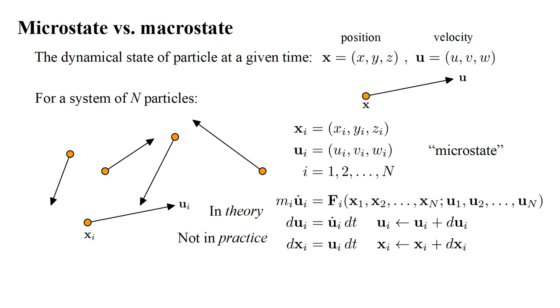But not in practice. The obvious practical problem is that a macroscopic volume of gas can contain millions of billions of molecules. The bookkeeping and computations required to describe the evolution of so many particles is simply intractable. And, as we will see shortly, there is a more fundamental problem when trying to track the microstate of a gas through time.